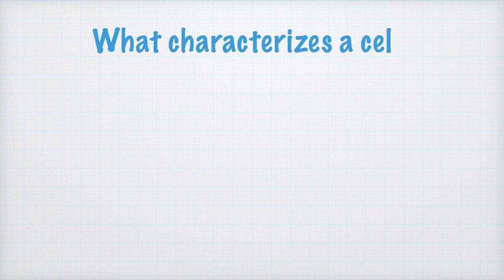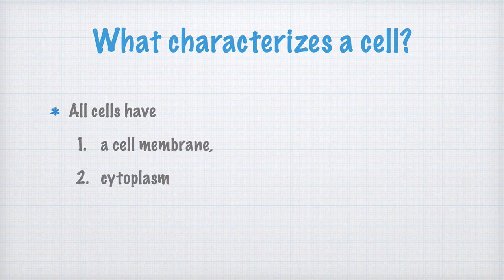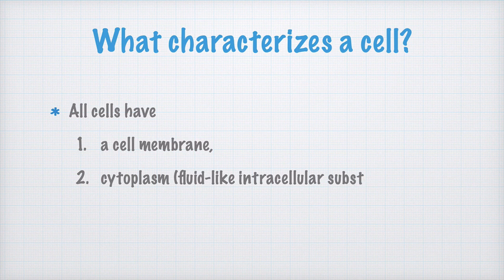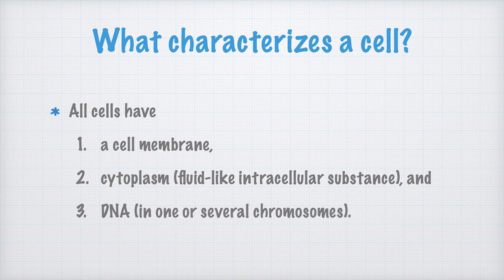So what is a cell? What characterizes it? Well, let's write that all cells have a cell membrane and a cytoplasm. The cytoplasm is a fluid-like intracellular substance, that is a substance inside the cell. All cells also contain DNA in one or several chromosomes.